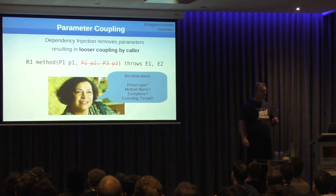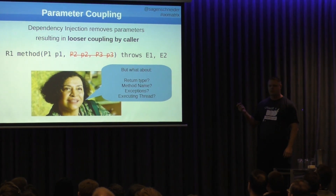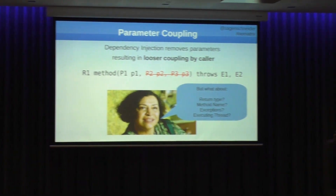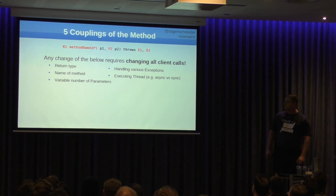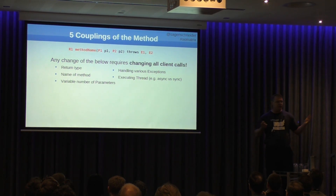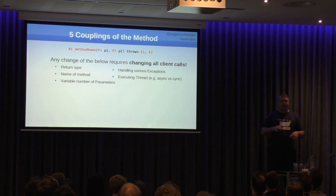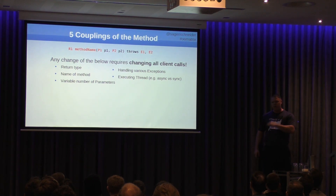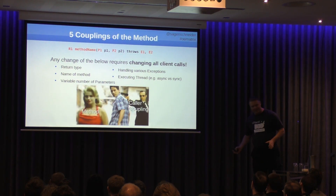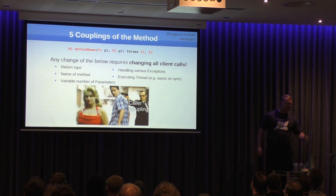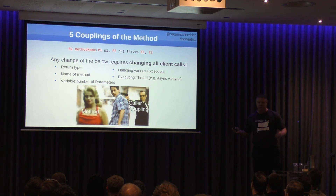However, what about the rest of the method? What about the return type, the method name, the exceptions, the executing thread? When we look at the method, there are actually five aspects of coupling to it. Changing any one of these means you have to change all your client calls. If I'm writing a library or an API and I have to change one of those things, I have to change it everywhere. We keep focusing on the method, dressing it up — putting reactive styles on it — but caller coupling is just sitting there the whole time.